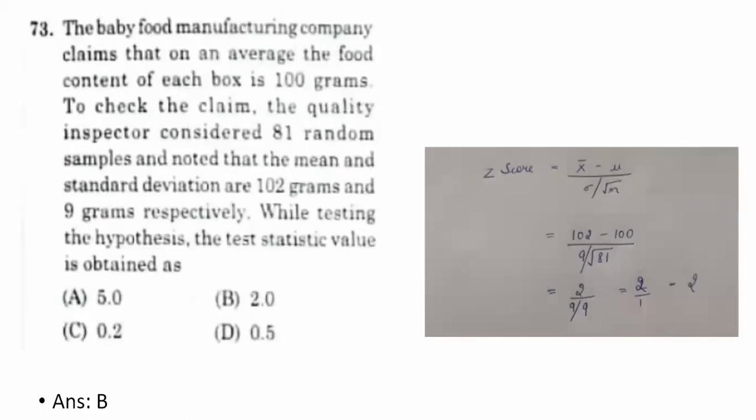Seventy-third question: a baby food company claims average food content per box is 100 grams. A quality inspector takes 81 random samples with mean 102 grams and standard deviation 9 grams. The test statistic using the Z formula: Z = (x̄ − μ)/(σ/√n) = (102 − 100)/(9/√81) = 2/1 = 2. The correct option is B — 2.